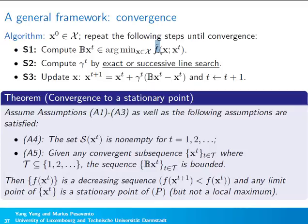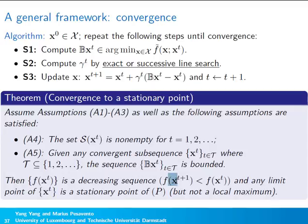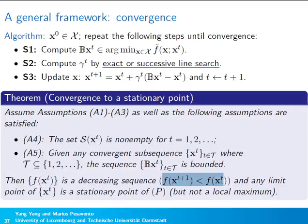If assumptions on the approximate functions and some additional conditions are satisfied, then the sequence of function values is decreasing, and any limit point of the variable sequence is a stationary point of the original optimization problem. Furthermore, the stationary point to which the algorithm converges is not a local maximum, since the function value is decreasing throughout.